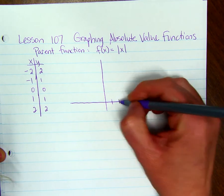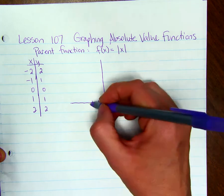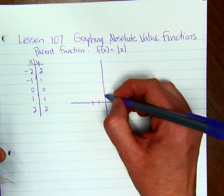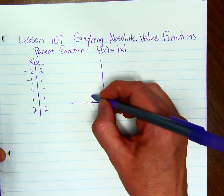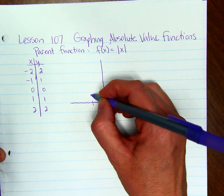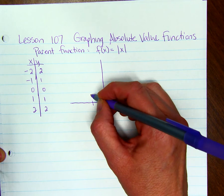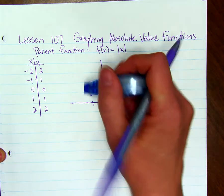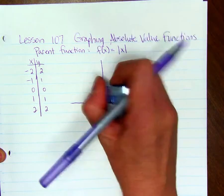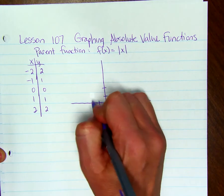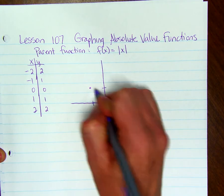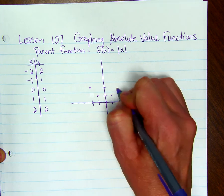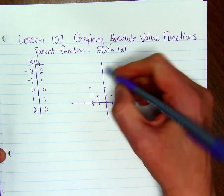When x is negative 2, y will be 2. So our coordinate pairs are: negative 2, 2; negative 1, 1; 0, 0; 1, 1; 2, 2.